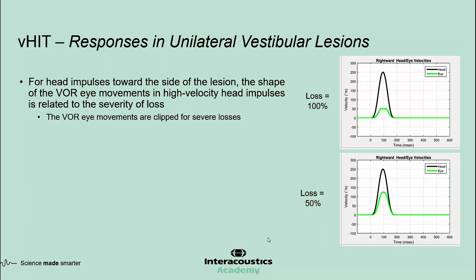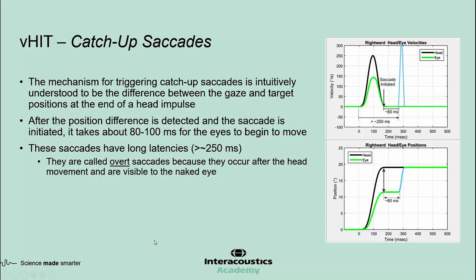Looking at the shape of eye movements, for head impulses toward the site of lesion, the shape of VOR eye movements in high-velocity head impulses is related to the severity of the loss. In severe losses, for high-velocity impulses, the VOR eye movements will be clipped or saturated; for less severe losses, the clipping will not be as noticeable. In VHIT, we instruct patients to keep their eyes on the target. If VOR eye movements are not adequate to put the eyes on the target, the oculomotor pathways will be activated and the saccadic mechanism will attempt to move the eyes to the target.